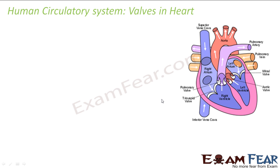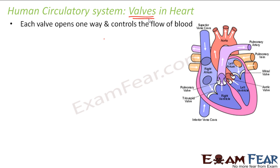When discussing the structure of the human heart, it is very important to talk about the valves. Other than the four chambers, there are four valves which play a very important role. These valves are regulators that control the flow of blood inside the heart — they decide when blood should flow from the auricle to the ventricle. Each valve opens one way and controls the flow of blood.